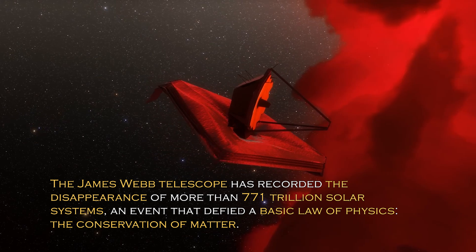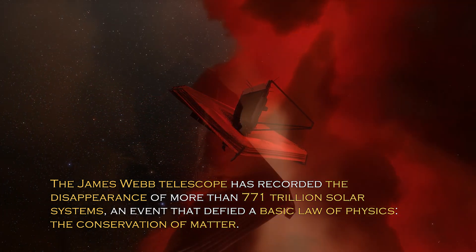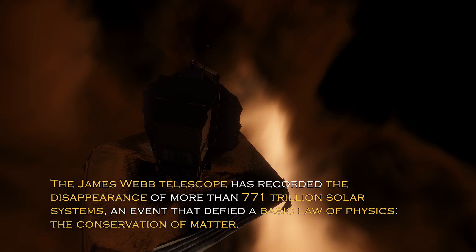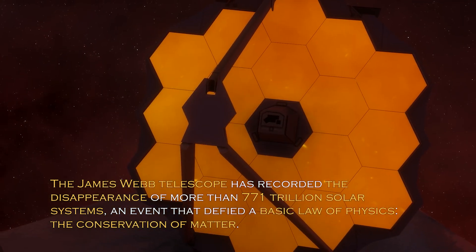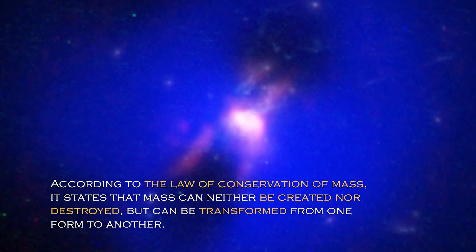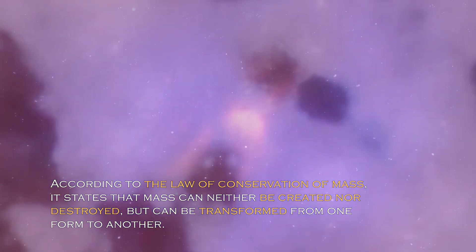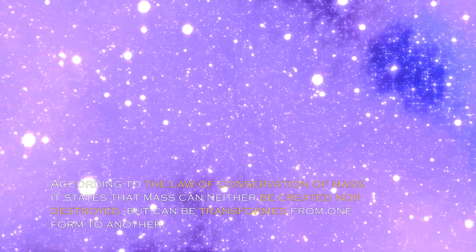The James Webb telescope has recorded the disappearance of more than 771 trillion solar systems, an event that defied a basic law of physics, the conservation of matter. According to the law of conservation of mass, it states that mass can neither be created nor destroyed, but can be transformed from one form to another.